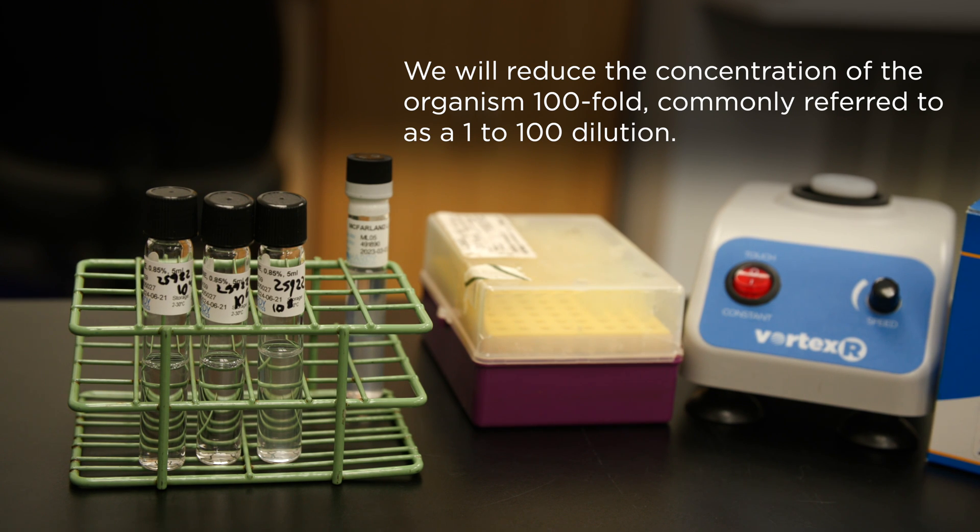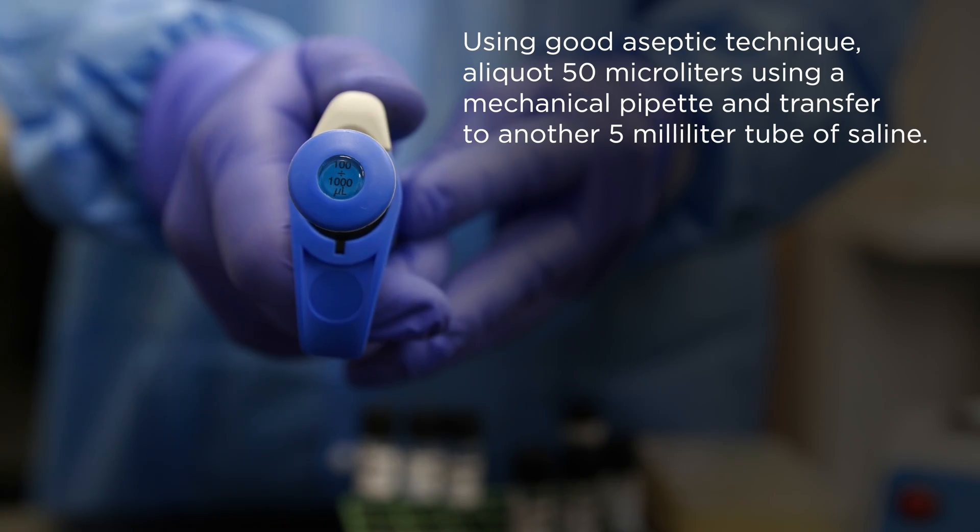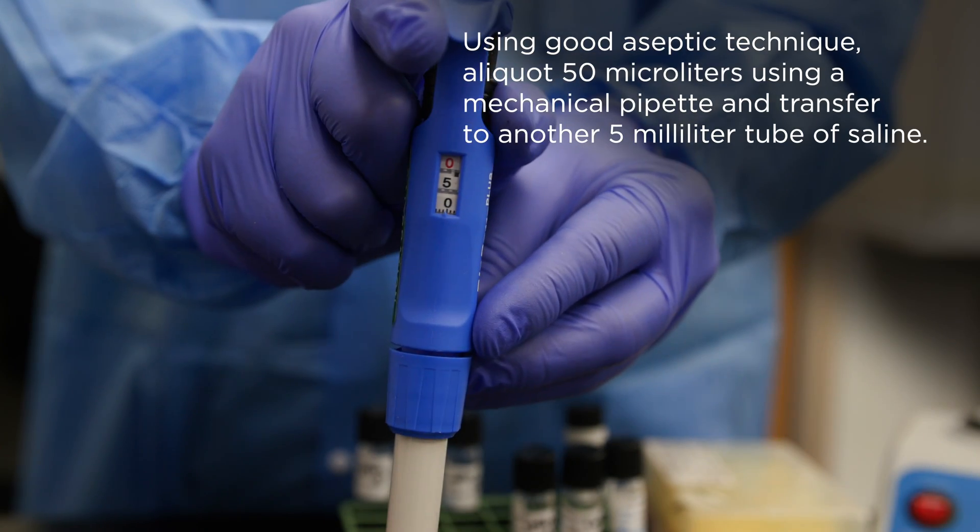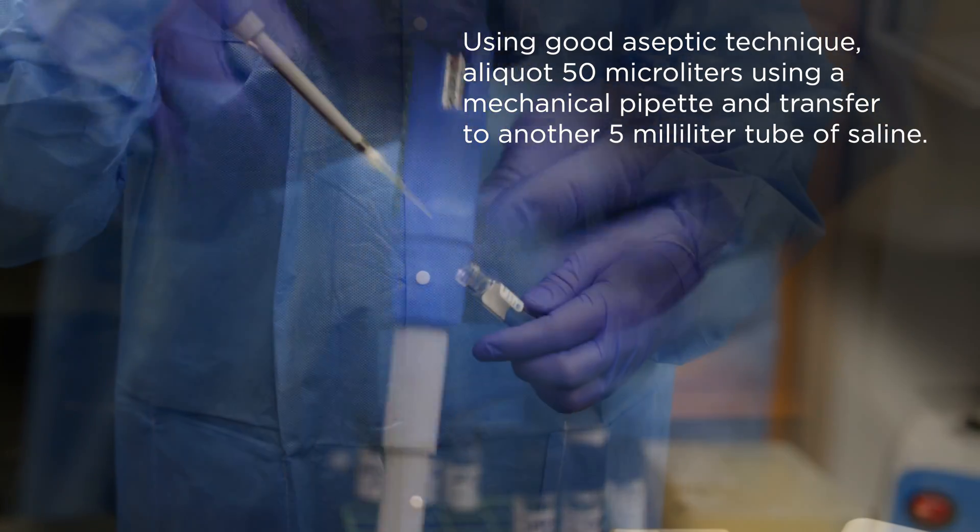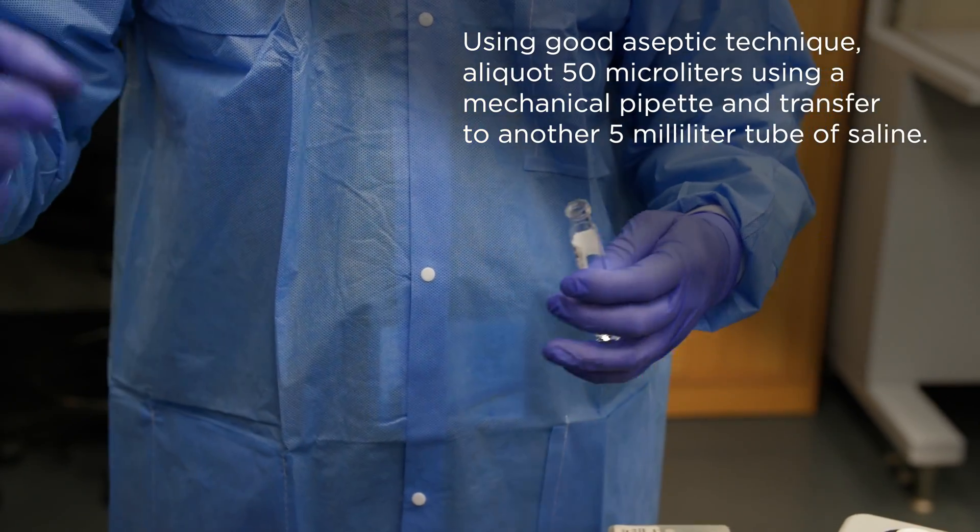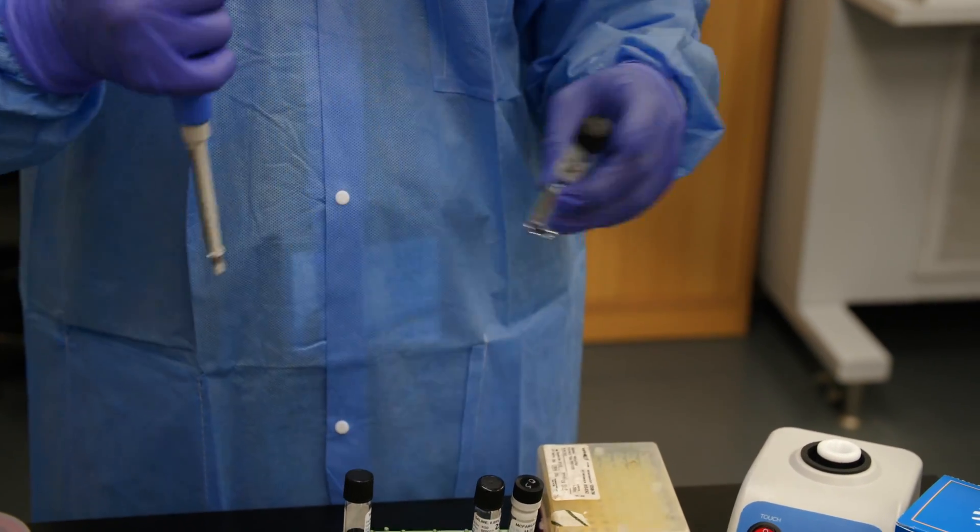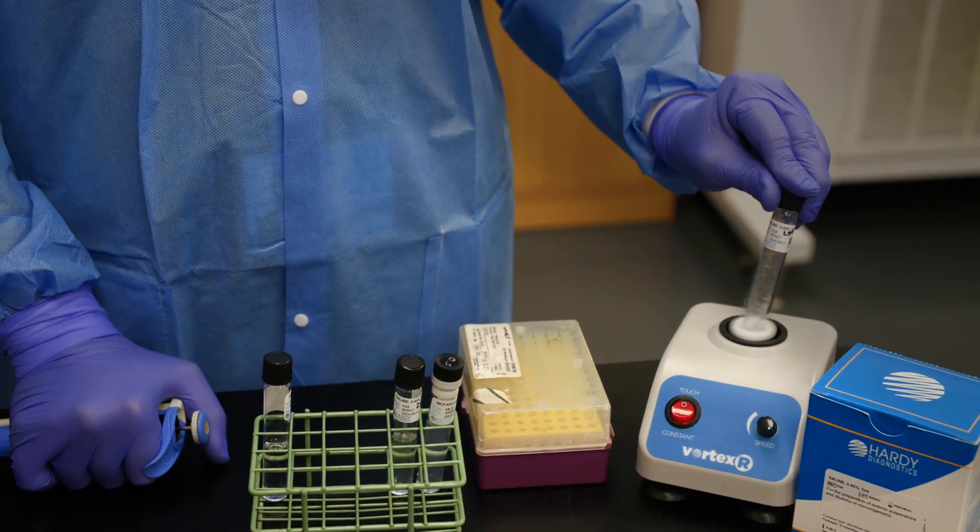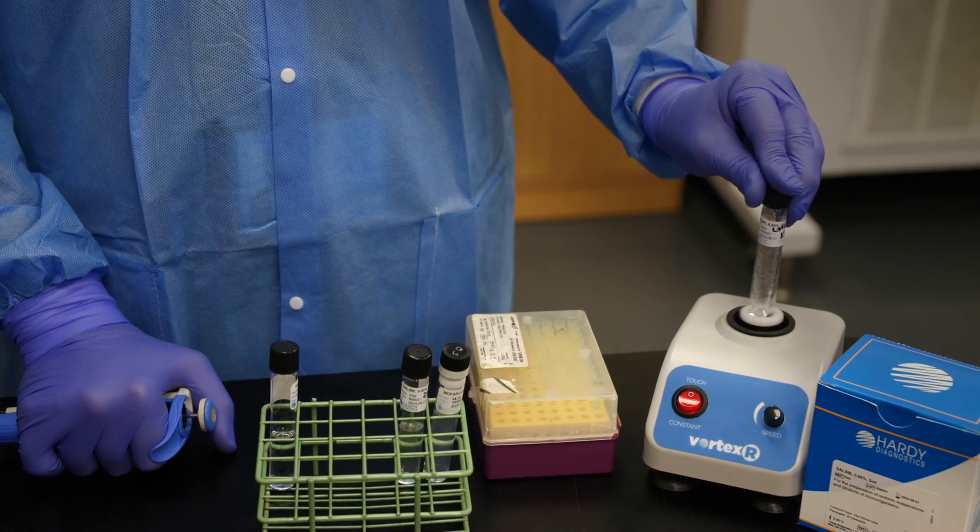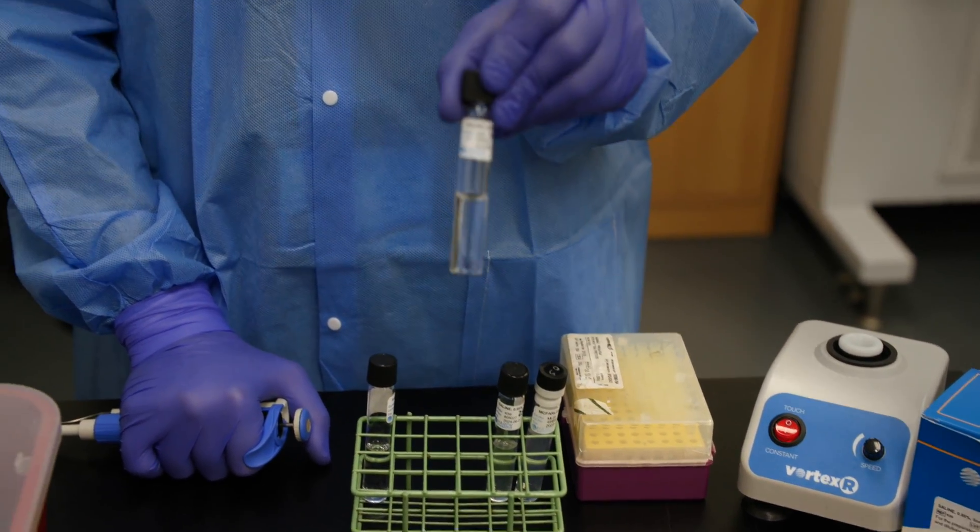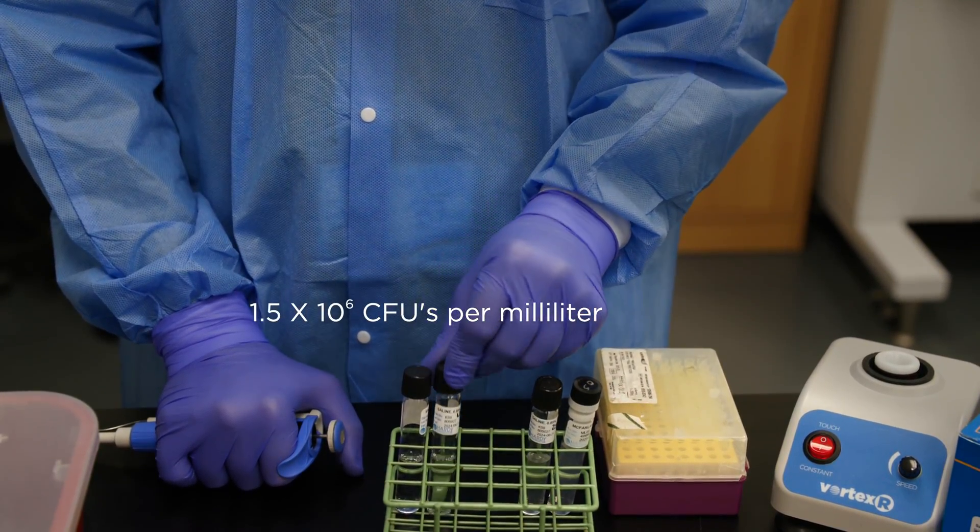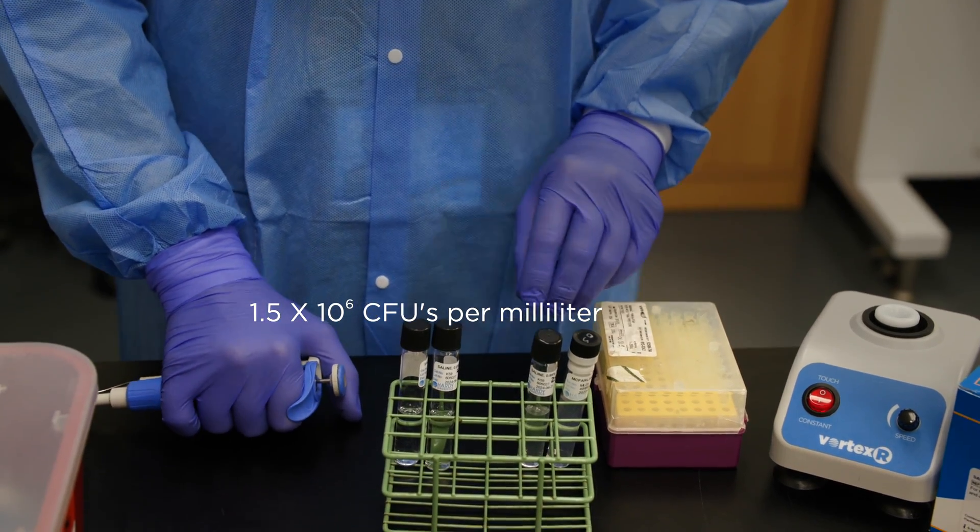We will reduce the concentration of the organism 100 fold, commonly referred to as a 1 to 100 dilution. Using good aseptic technique, aliquot 50 microliters using a mechanical pipette and transfer to another 5 milliliter tube of saline. Place the cap back on the tube and vortex to homogenize. The approximate concentration of the organism in this tube is now 1.5 times 10 to the 6 CFUs per milliliter.